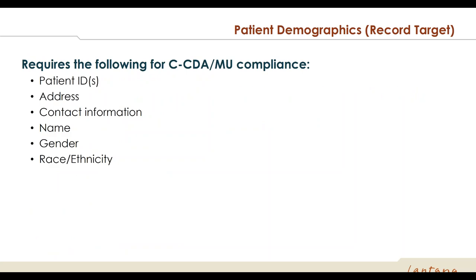The key patient demographics required by the CDA header and for Meaningful Use compliance include: patient IDs such as social security number, driver's license number, and medical record number; address and contact information; name; gender; and for Meaningful Use, race and ethnicity information are also required.